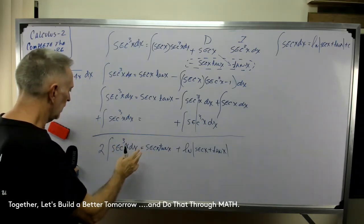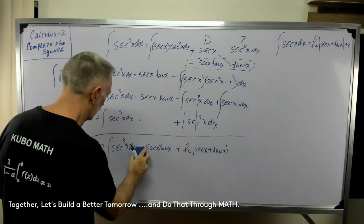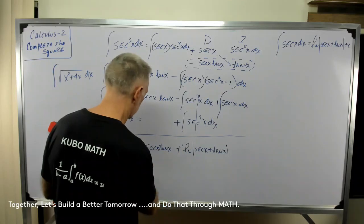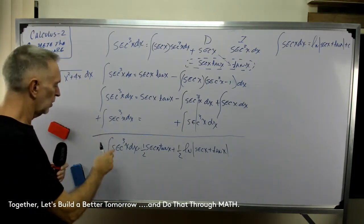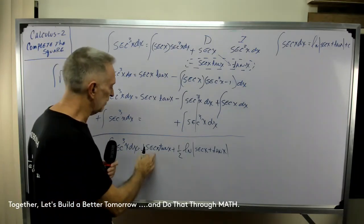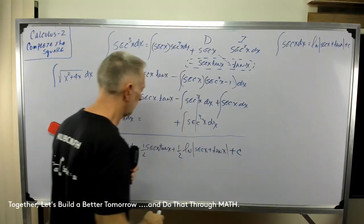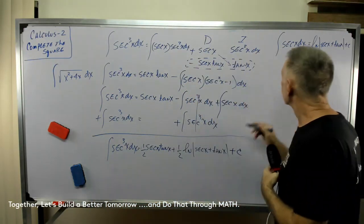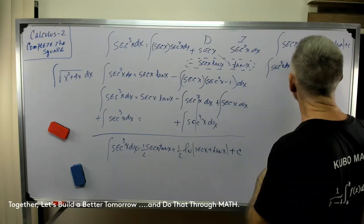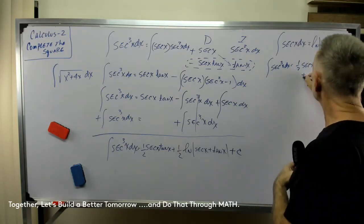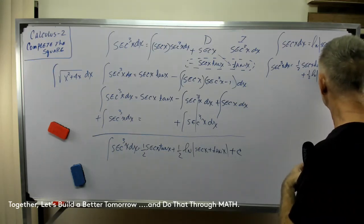We did this integral just a moment ago, so we know what that is. Let's replace this with the natural log — the natural log of the absolute value of secant x plus tangent x, plus C. Now I don't want two of these, I only want one, so I'm going to multiply by one-half. One-half times two becomes one, so the integral of secant cubed x dx equals one-half secant x tangent x plus one-half the natural log of the absolute value of secant x plus tangent x plus C. I'll store that one up here.